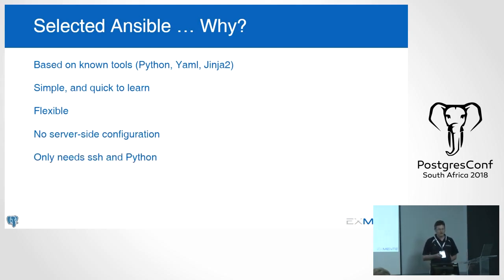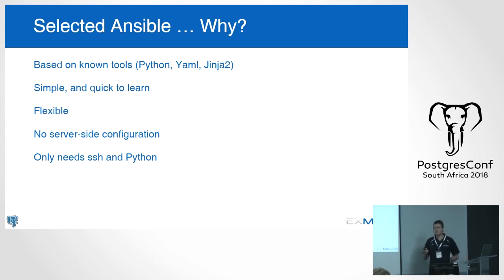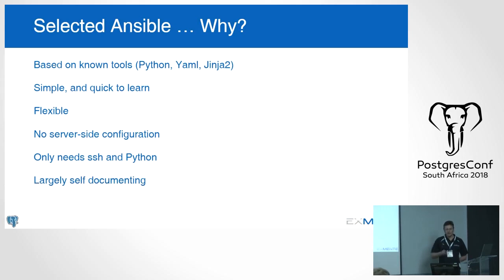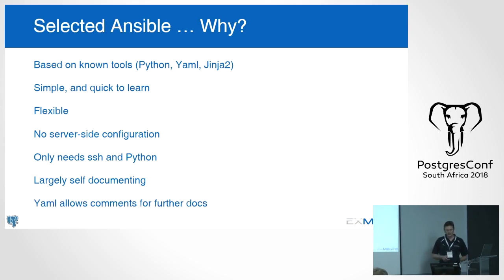Because Ansible is written in Python it's easy to figure things out. It's really simple and quick to learn. It's flexible — we have a fairly complicated use case and it was more than capable of dealing with that. You do no server-side configuration. The only things you need are SSH active on the server with the port open, and Python installed on the server. That's it.